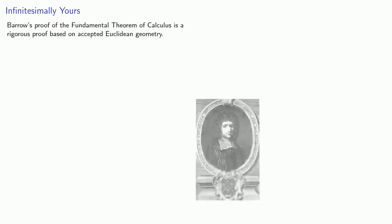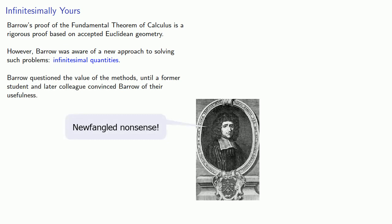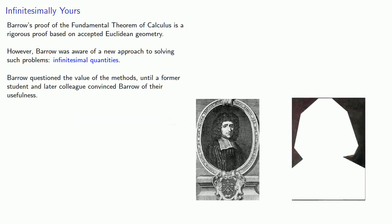The preceding proof is a rigorous proof based on accepted Euclidean geometry. However, Barrow was aware of a new approach to solving such problems, infinitesimal quantities. Barrow questioned the value of the methods until a former student and later colleague convinced Barrow of their usefulness.